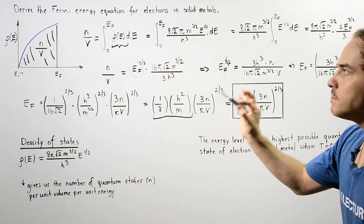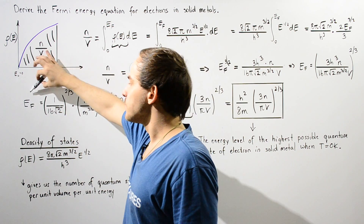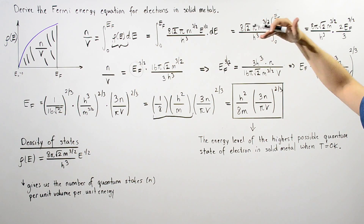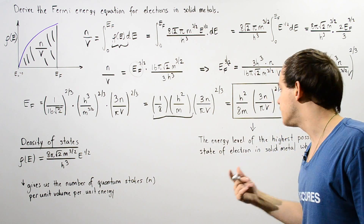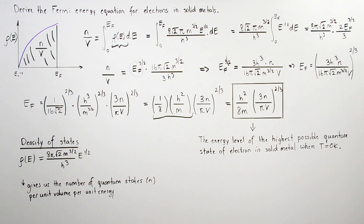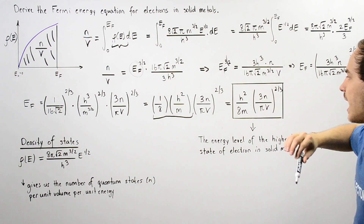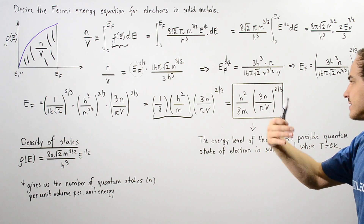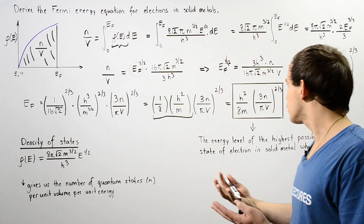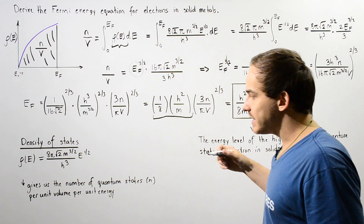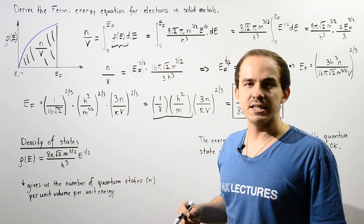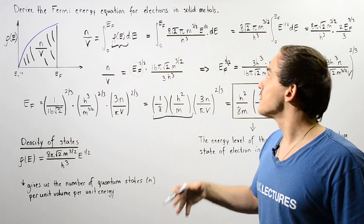This equation gives us the energy level of the highest possible quantum state of the electron in the solid metal when the temperature is zero Kelvin. In this equation, h is Planck's constant, m is the mass of the electron, pi is a constant, V is the volume of the solid metal being considered, and lowercase n (also written as uppercase N) gives us the number of energy quantum states that electrons can have inside that particular solid metal.